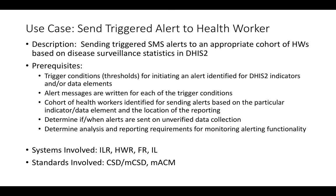Since each of the indicators and data elements reflect different public health conditions and disease surveillance conditions, we're going to need different alert messages written for each trigger condition, as well as potentially for the various cohorts we want to define. We also need to define exactly who that cohort is — is it based on health worker deployment data, a contact group of specific health workers, or dependent on the cadres of the health workers? For each trigger condition, we need this information defined and determined.